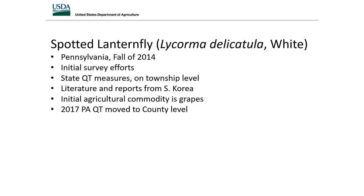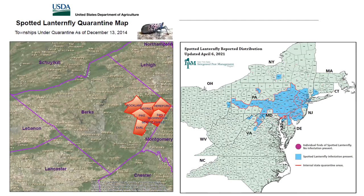It's important to understand spotted lanternfly on a general level, but there are significant differences depending on population levels, host shifts, landscape type — rural, suburban, or urban — and specific site types like vineyards or nurseries. Showing maps: the initial quarantine covered a small area in Berks County; the current map from the Northeast IPM Center shows confirmed SLF in blue across multiple states, with purple dots indicating new ports of entry without confirmed populations. Spread has progressed from Pennsylvania to Virginia, New Jersey, Delaware, Maryland, New York, Connecticut, and Massachusetts.